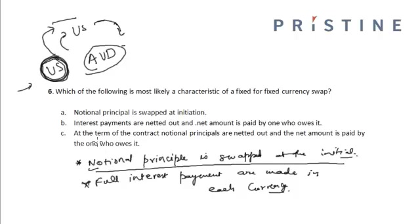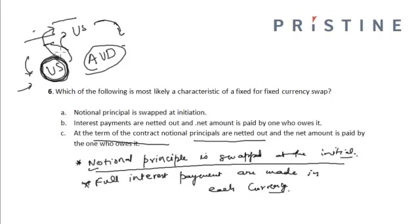Since the notional principals were swapped at the initiation of the contract, at the end of the contract the notional principals are swapped again. The American who gave US dollars to the Australian will receive back his US dollars, and similarly the Australian will receive back his Australian dollars at the termination of the contract.